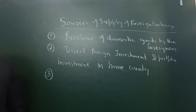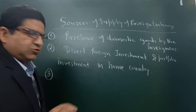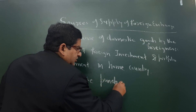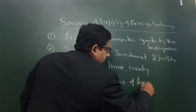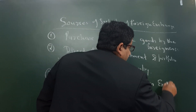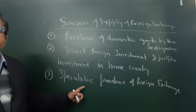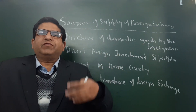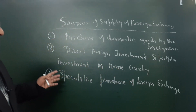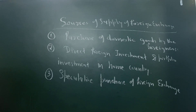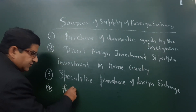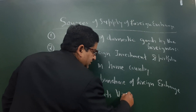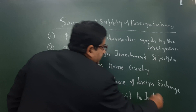Third point: speculative purchase of foreign exchange. When there is speculative purchase of foreign exchange, the supply will increase. Fourth point: foreign tourist visit to India. When foreign tourists come to India, then supply of foreign currency will increase.